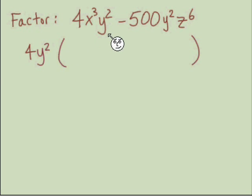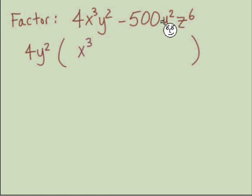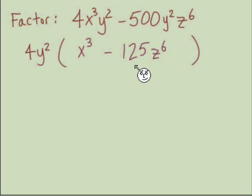We set up parentheses to drop in our leftovers. If we divide out 4y² from the first term, we're left with x³, and dividing 4y² from the second term leaves us with negative 125z⁶. There's our GCF factored out, and next we factor what's left inside those parentheses.